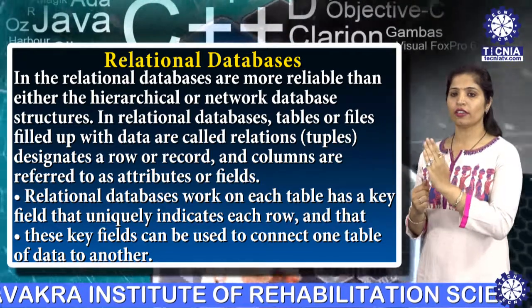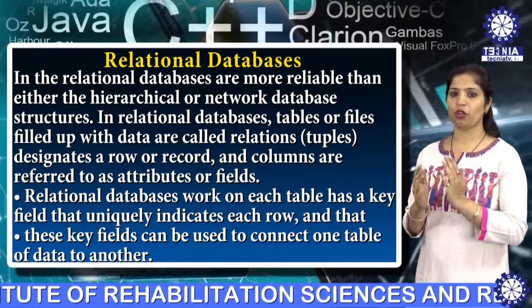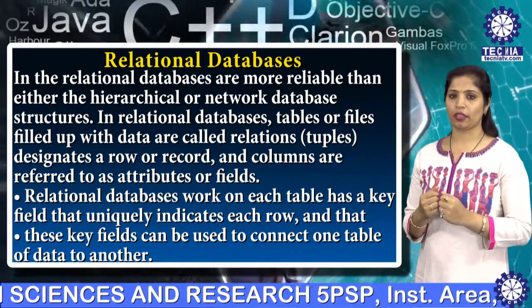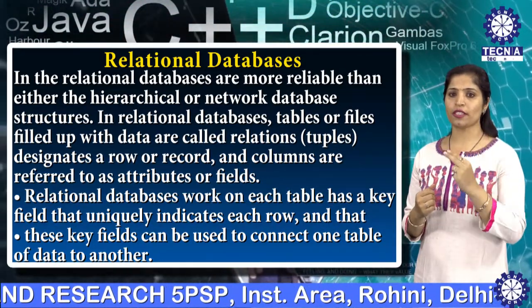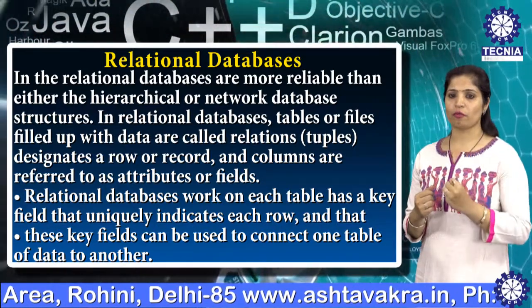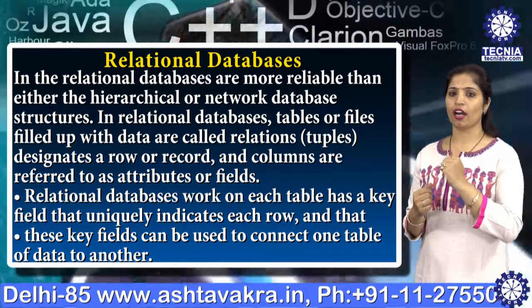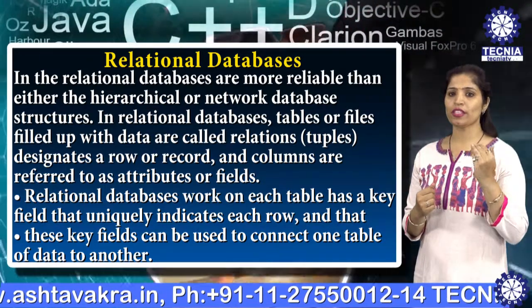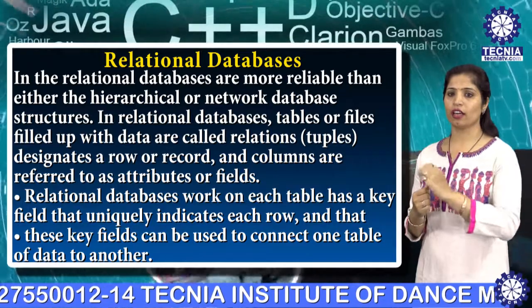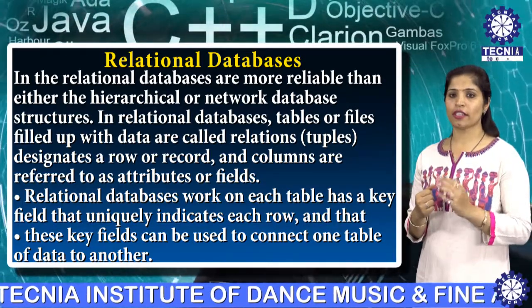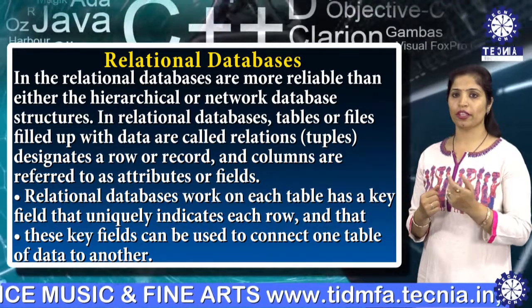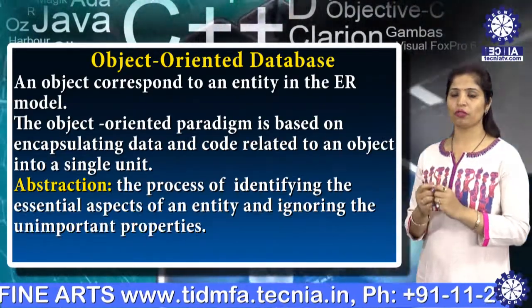The properties of a relational database table include: values are atomic, each row is unique, column values are of the same type, columns are undistinguished, the sequence of rows is insignificant, and each column has a column name.